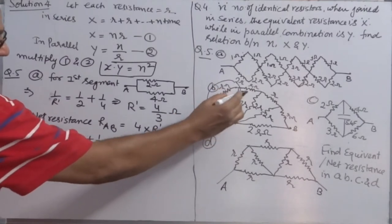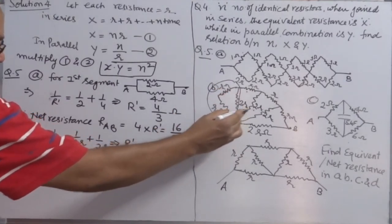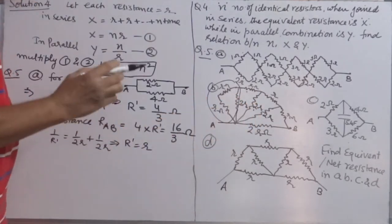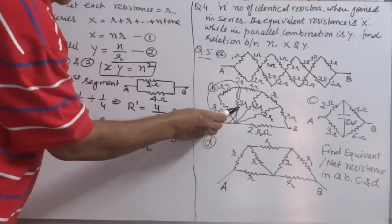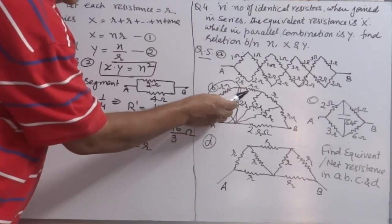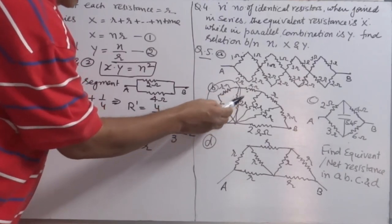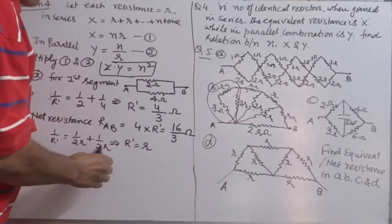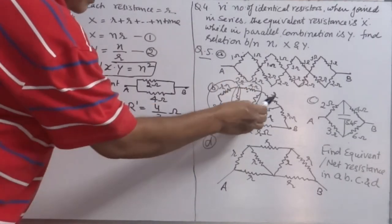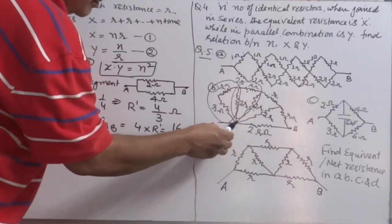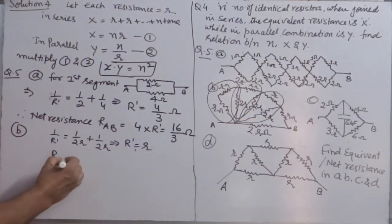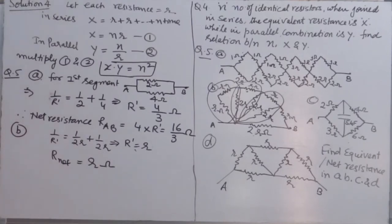So each section reduces to R. Then again R in series with another R gives 2R, in parallel with 2R — same situation — gives R again. This pattern repeats: 2R in parallel with 2R gives R each time. Eventually R and R in series gives 2R, and 2R in parallel with 2R again gives R. So the net equivalent resistance of the entire network is R.